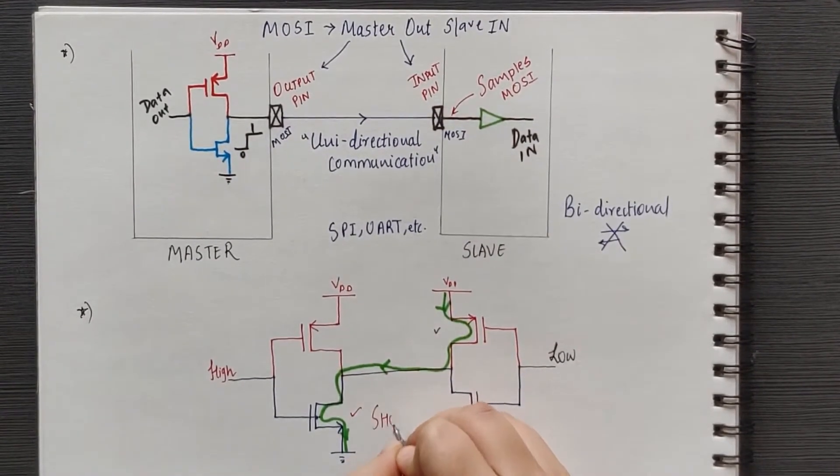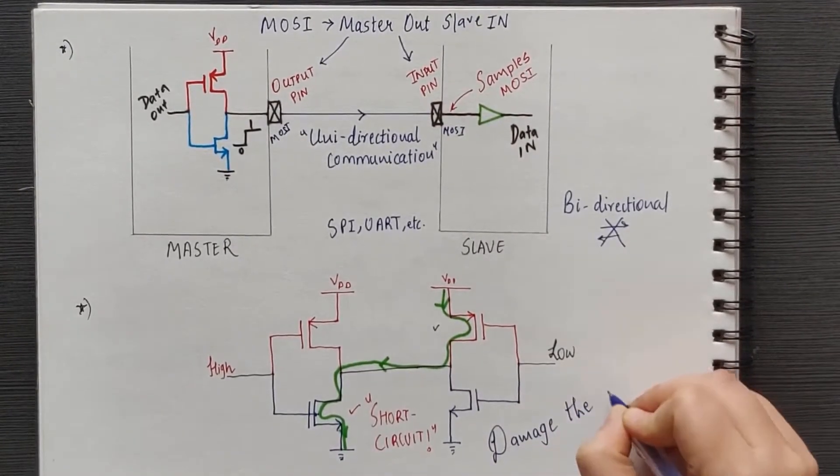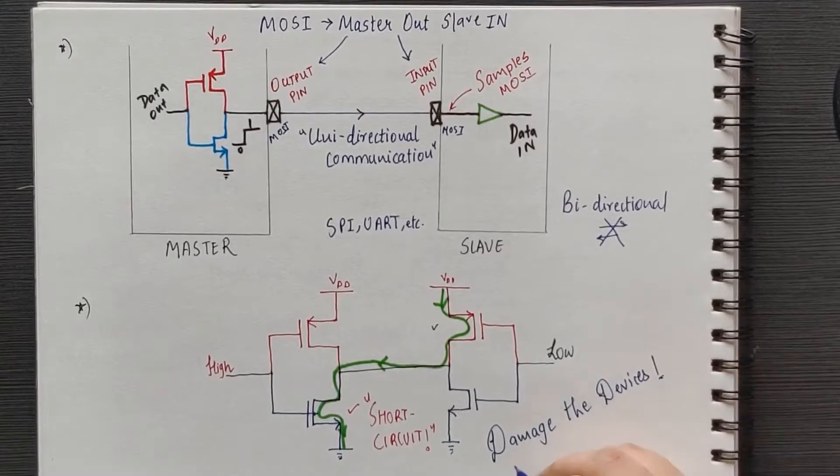then clearly the current will flow freely from VDD to ground, resulting in short circuit, which will damage the devices involved in communication.